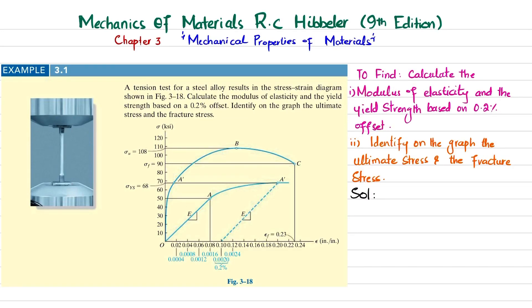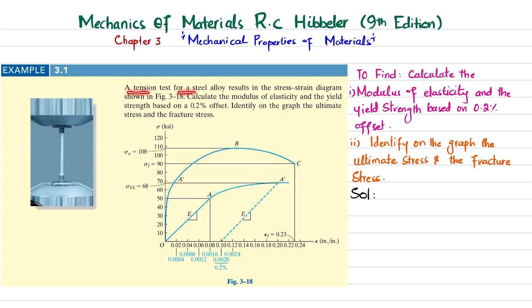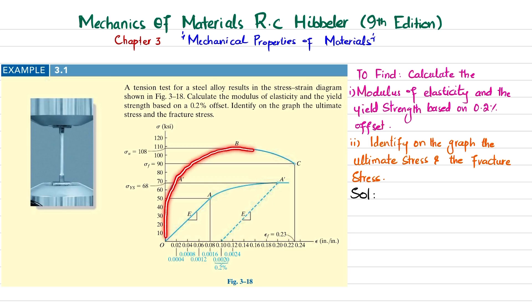Welcome back. In this video we are going to solve Example 3.1, taken from Chapter 3: Mechanical Properties of Materials, from the book Mechanics of Materials by R.C. Hibbeler, 9th edition. The problem statement is: a tension test for a steel alloy results in the stress-strain diagram shown in Figure 3.18. A tensile test is conducted and the resulting stress-strain diagram is shown.